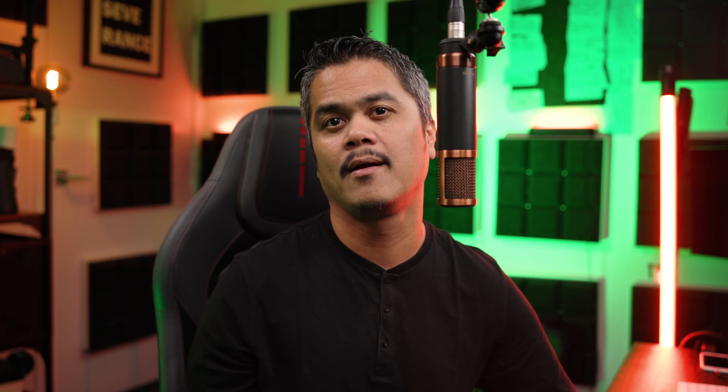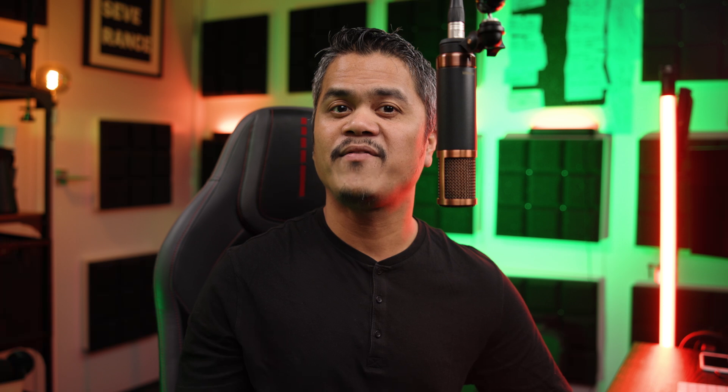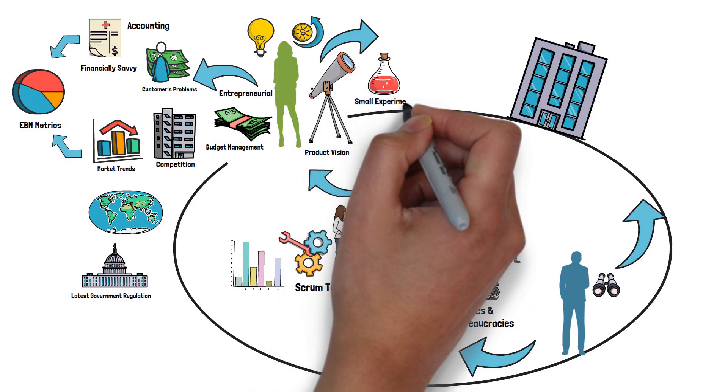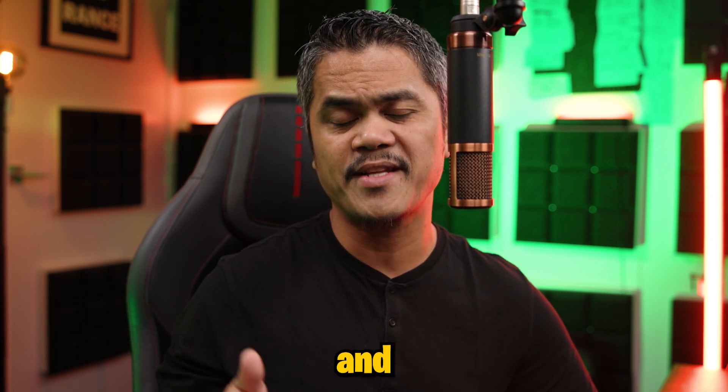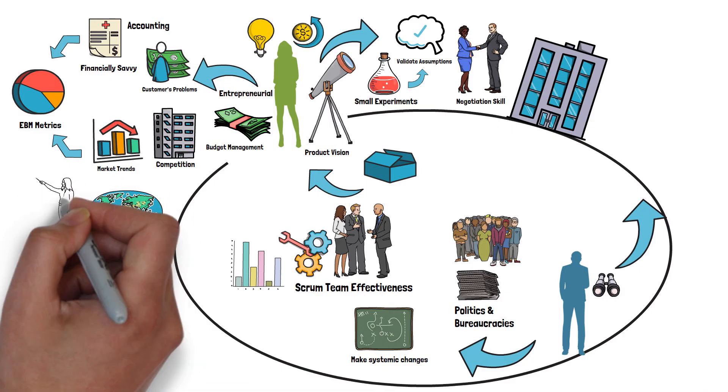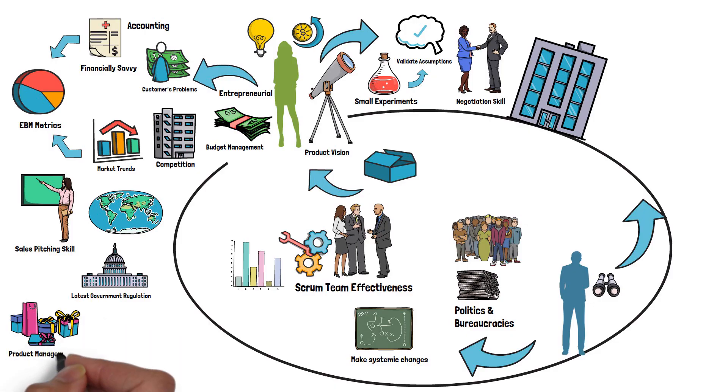Because the focus of the Product Owner and the Scrum Master is different, the skill sets required to be awesome at each role are also different. As an entrepreneur, the Product Owner needs to be financially savvy, knowing accounting, how to interpret Evidence-Based Management (EBM) metrics, and make future projections. They need to craft small experiments to validate assumptions, have negotiation and bargaining skills to handle conflicting stakeholder needs, and make effective sales pitches to get buy-ins from customers, stakeholders, and developers.